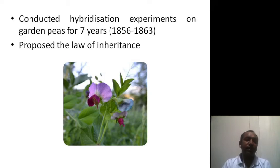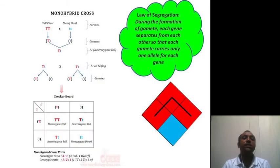So let us see the cross. This is your monohybrid cross. Now the term mono means one, so in this particular monohybrid cross only one trait is taken into consideration, that is your height of the plant.